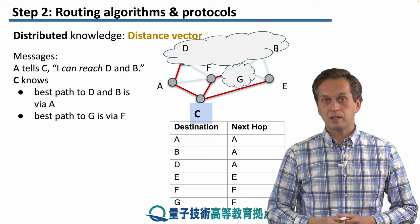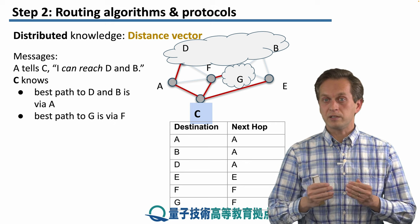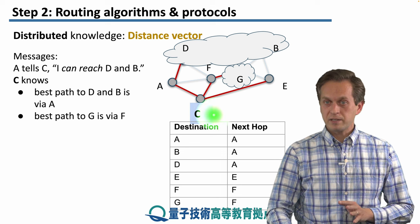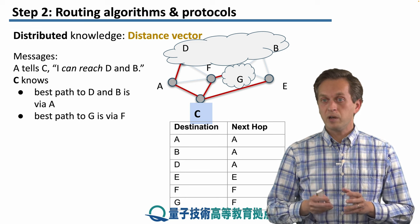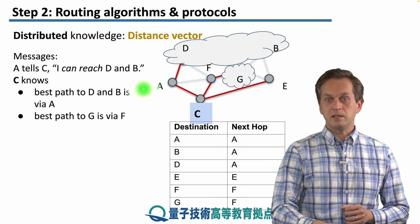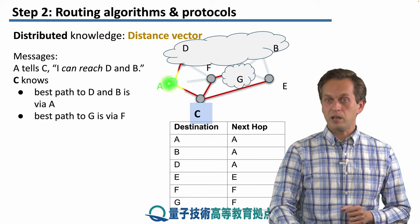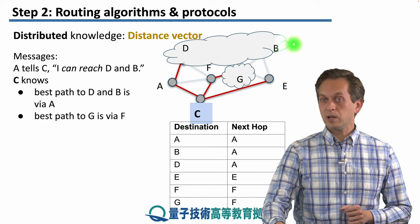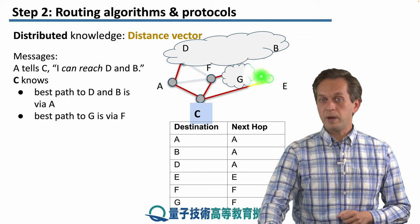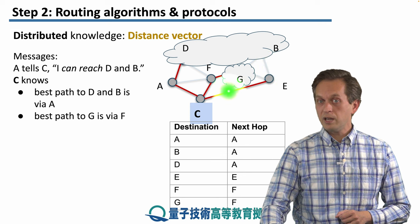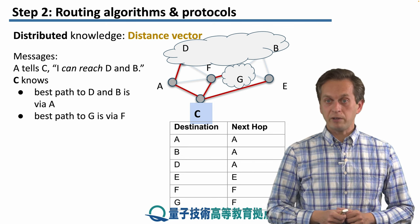Now let's consider the last class: distributed knowledge routing algorithms. Here, nodes build what's known as the distance vector — similar to a global link state, but nodes don't have full knowledge of the network, only partial knowledge. For example, A tells C: I can reach D and B. So C knows the best path to D and B is via node A. Similarly, the best path to the network at G is via F. Each node builds its routing table based on this partial information.